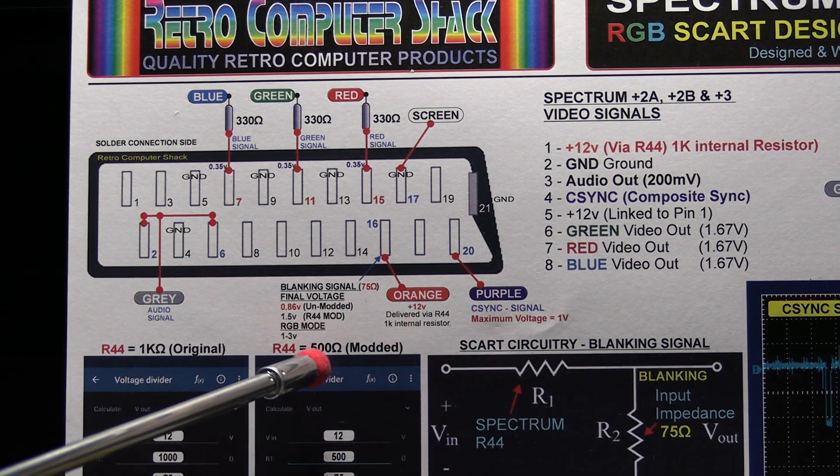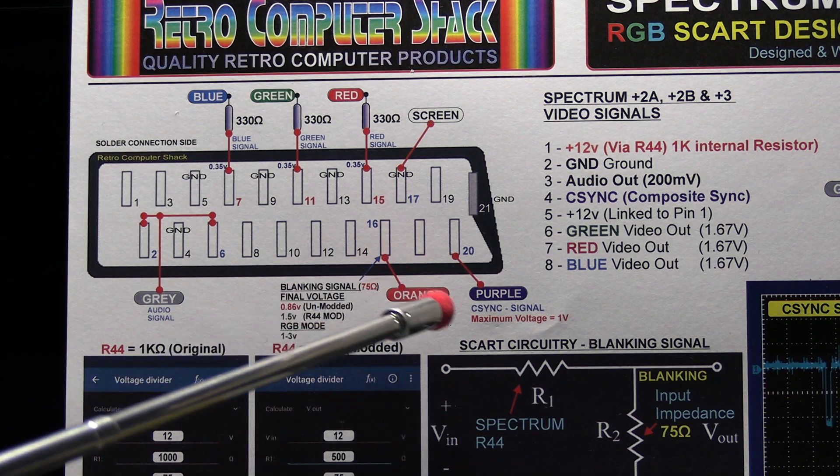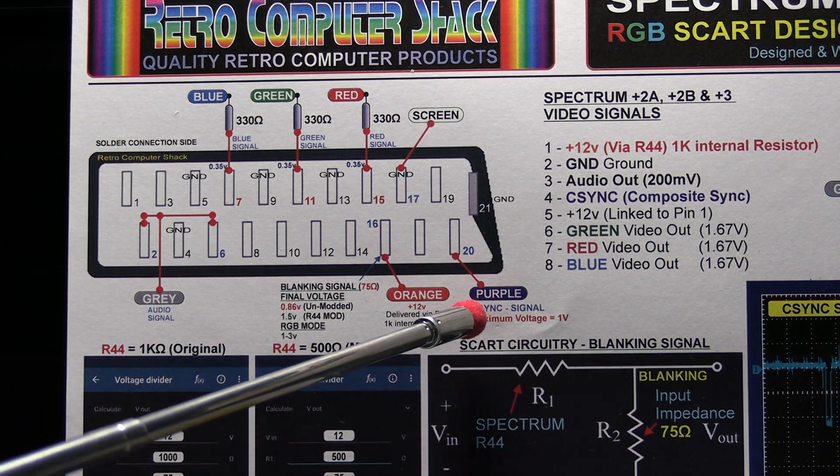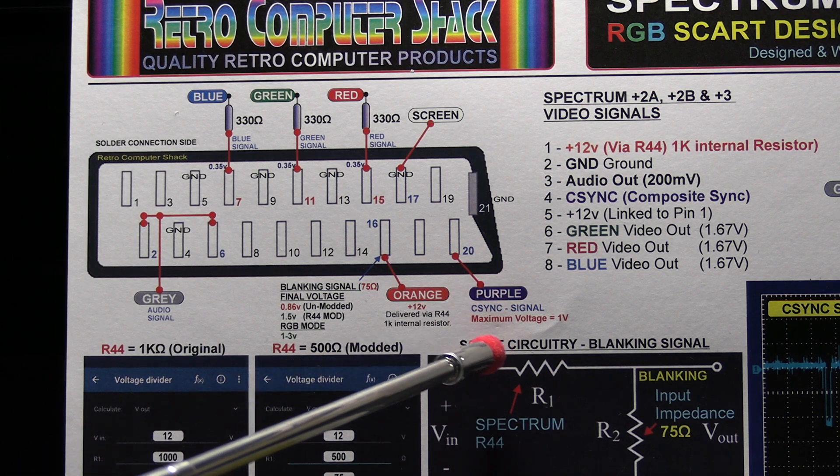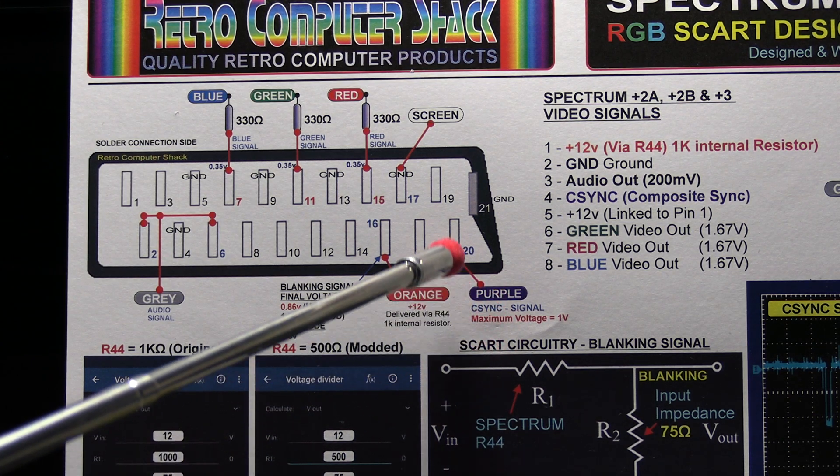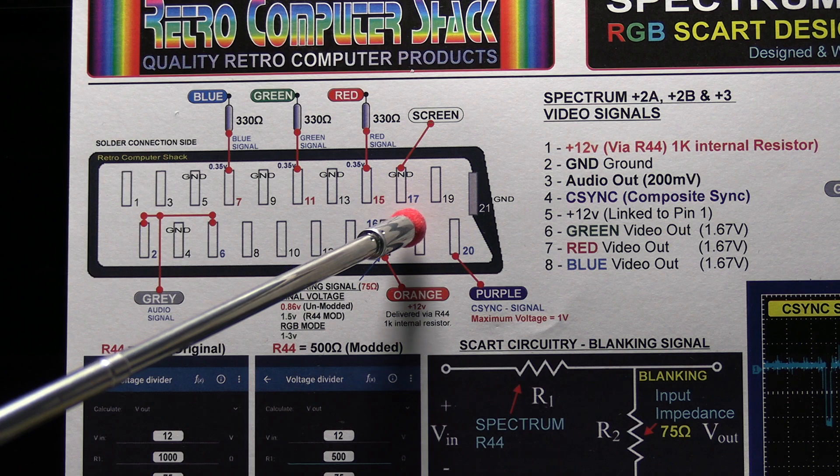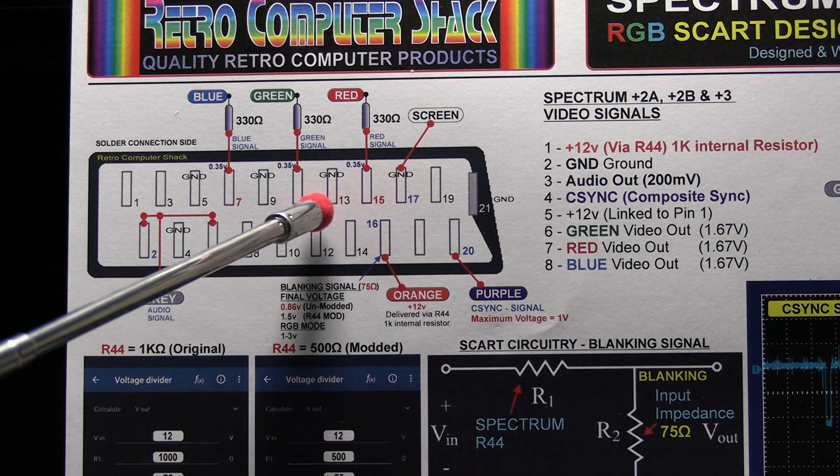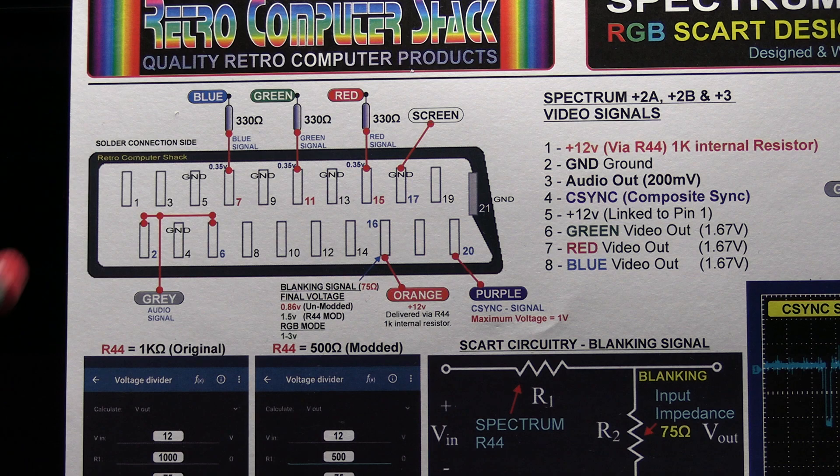If you input a voltage between one and three volts onto pin 16, pin 20 will be treated as a synchronising signal or a sync signal. And the video signals will be read from pins 15, 11 and 7, which is the RGB signals.